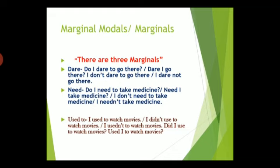Whenever dare and need become modal verbs, we use bare infinitive in the sentence — but remember, only in negative and interrogative sentences. The same concepts apply to 'used to'. The negative sentence can be made as 'I did not use to watch movies' — like a normal finite verb in past tense. But it can also be used as a modal verb: 'I use not to watch movies'. For interrogative: 'Did I use to watch movies?' as a normal finite verb, or 'Used I to watch movies?' as a modal verb.